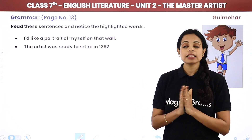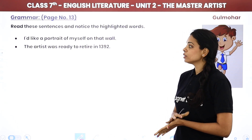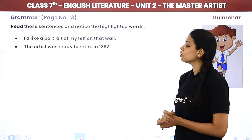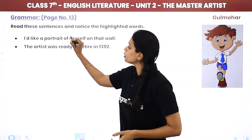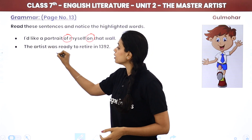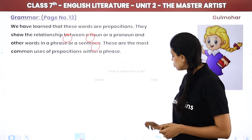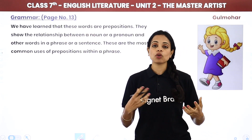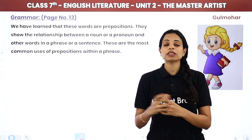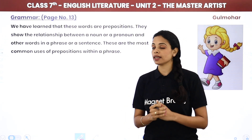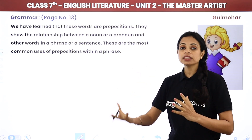Now we are done with the question answers. We will start the grammar part. Read these sentences and notice the highlighted words: 'I would like a portrait of myself on that wall.' 'The artist was ready to retire in 1392.' Here we are talking about prepositions. Prepositions are words like in, on, at, off, which show the position of a noun or connect it to the rest of the sentence. They show the relationship between a noun or pronoun and other words in a phrase or sentence.